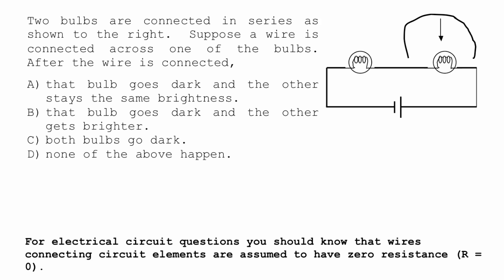The bulb that it's connected across goes dark, and the other stays the same brightness? The bulb that it's connected across goes dark, and the other gets brighter? Both bulbs go dark? Or none of the above? Something else.